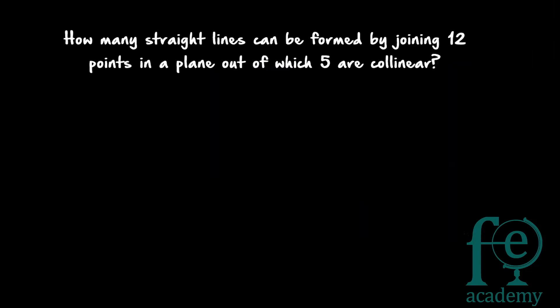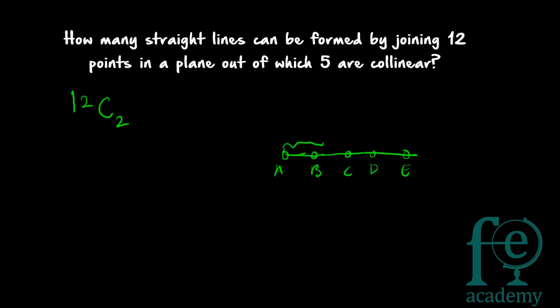Last question: how many straight lines can be formed by joining 12 points in a plane, out of which 5 are collinear? To form a straight line you select 2 points from the given points. With 12 points you get 12C2 ways to select 2 points. But 5 points are collinear — they all lie on one straight line. So selecting any 2 of those 5 points will not give you an extra straight line; they all fall on the same existing line.